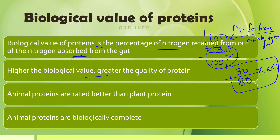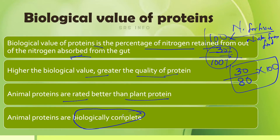Higher the biological value, greater the quality of protein. Based on biological value, we can analyze protein quality, and this shows that animal proteins are rated better than plant proteins. Animal proteins are biologically complete because they contain all essential amino acids.